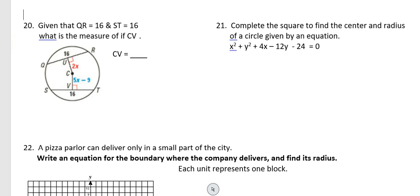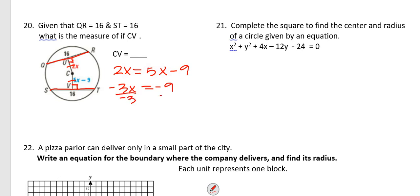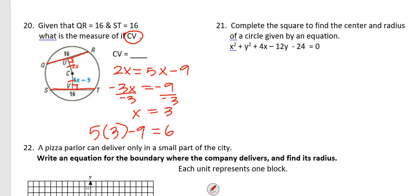Number 20: QR = 16 and ST = 16, so the two chords are congruent. Since congruent chords are equidistant from the center, we set 2x = 5x − 9. Subtracting 5x: −3x = −9, so x = 3. The problem asks for CV, so we plug in: 5(3) − 9 = 6. Checking: 2(3) = 6 as well, so the answer is CV = 6.